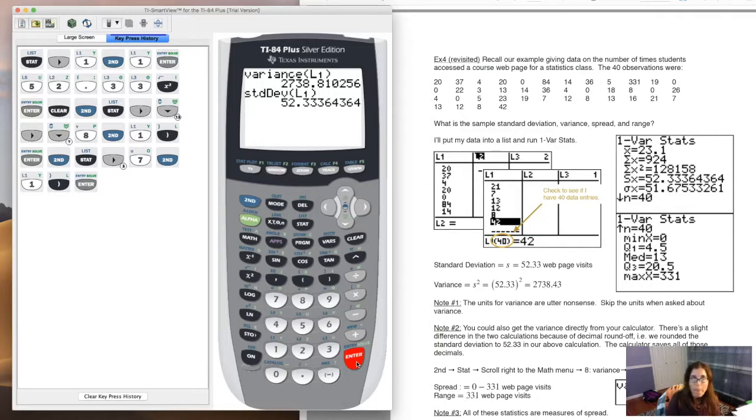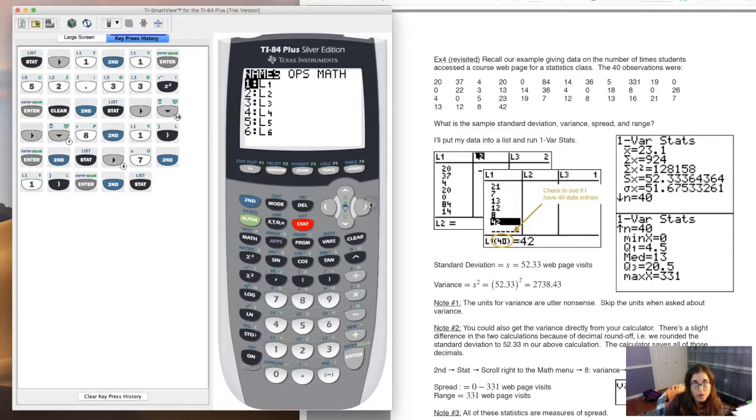If I go over to second stat, you see option seven. I'm not going to scroll down and hit enter, I'm just going to hit seven. I can tell my calculator can you please get me the standard deviation for the data set in L1. There's that number again. The functions over in this math menu, most of them are in one var stats, so one var stats is great in that it gives all sorts of information to you at once.